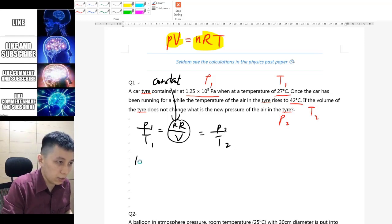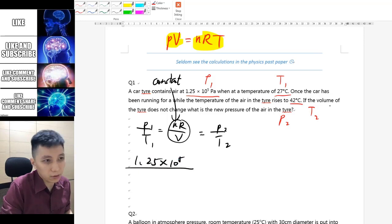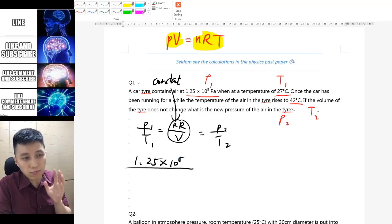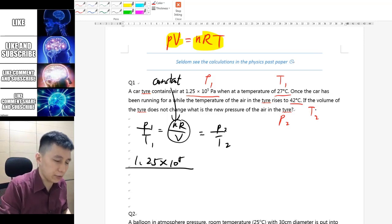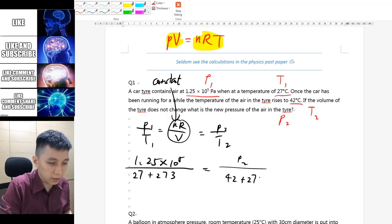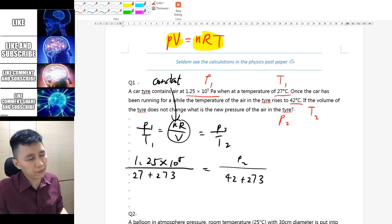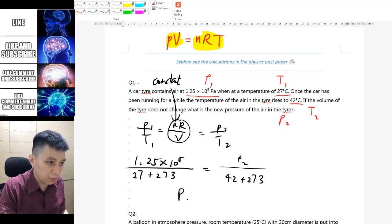The rest will be quite simple. You have 1.25, just substitute the numbers. For temperature, one thing that you must be very careful is the temperature must be in Kelvin, so 27 plus 273, and P2 is the unknown, T2 is 42 plus again 273 to convert to Kelvin.